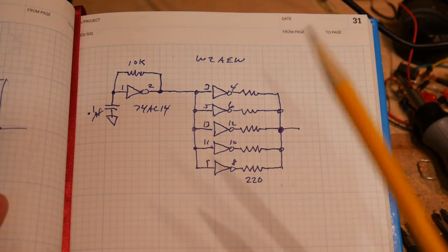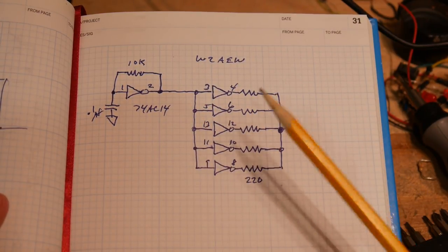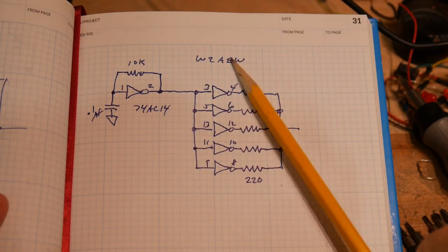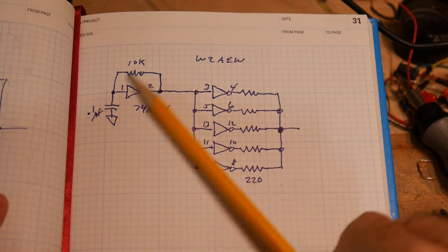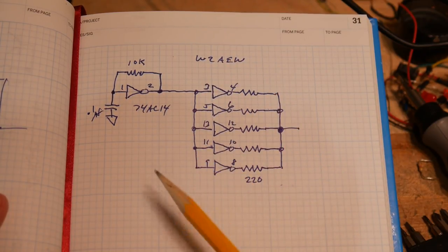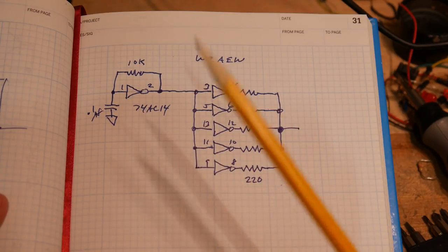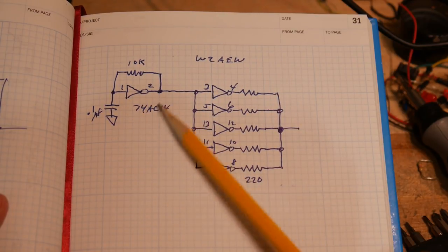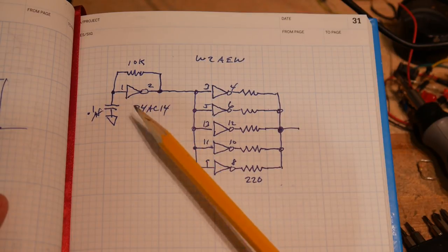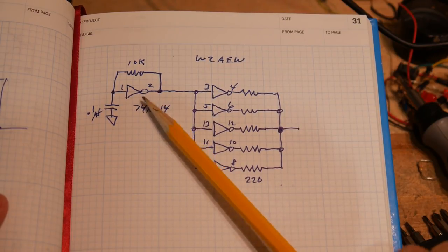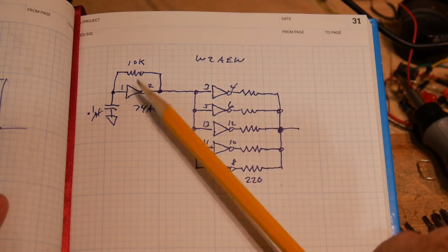Alright, I'm going to be building this circuit today. This came from W2AEW and it's a pulse generator. It outputs a pulse regularly using an oscillator. It uses a 74AC14 Schmidt trigger inverter.